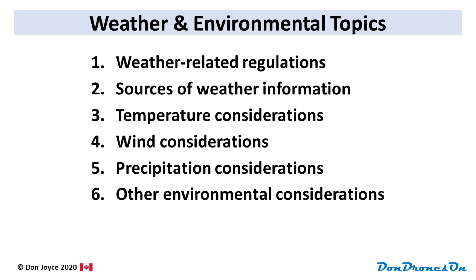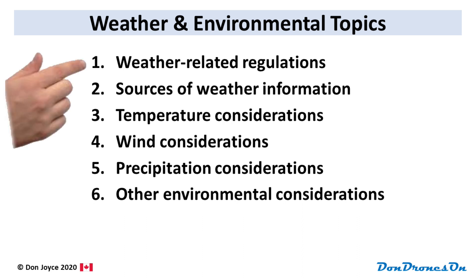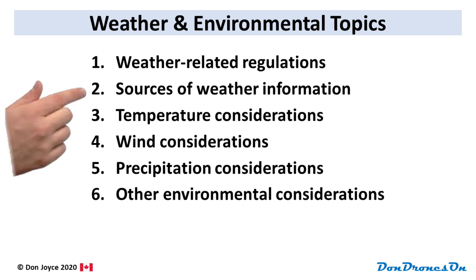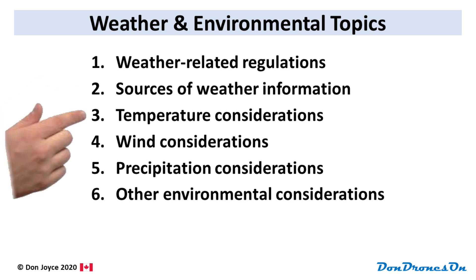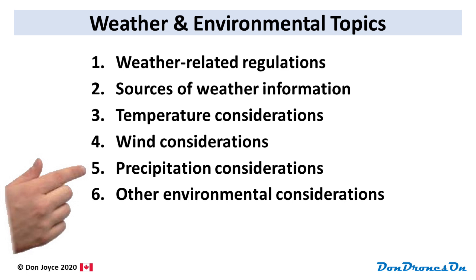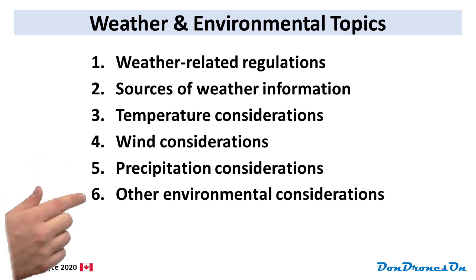We're going to cover six topics, starting with weather-related regulations for drones in Canada. Number two, sources of weather information, including aviation sources. And then four different consideration areas: temperature, wind, precipitation, and some other stuff.